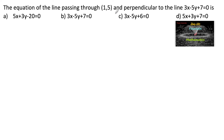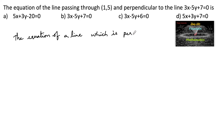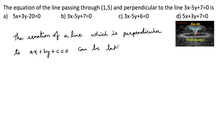The equation of the line passing through (1,5) and perpendicular to the line 3x - 5y - 7 = 0. The equation of a line perpendicular to ax - by - c = 0 can be taken in the form bx - ay + k = 0.